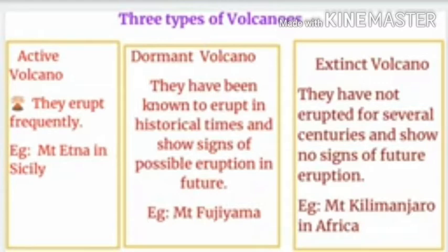Extinct volcanoes have not erupted in the present geological period and there is no chance of further eruption. Examples include Mount Aconcagua in South America, which is a very familiar name we have learned in the seventh standard, and Mount Kenya in Africa.